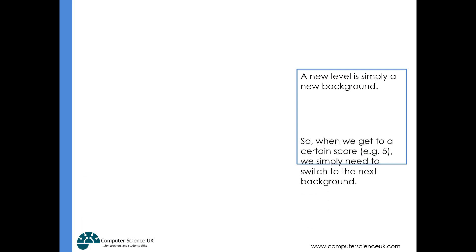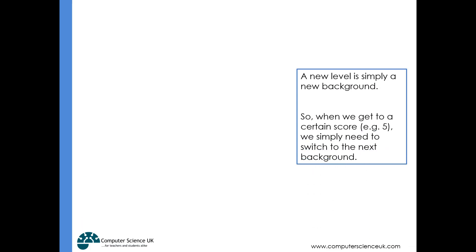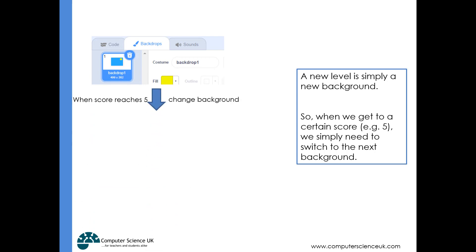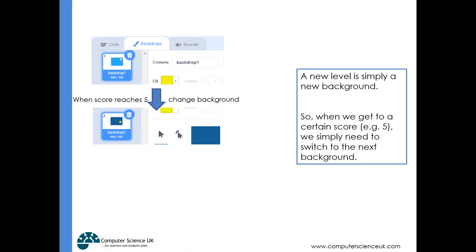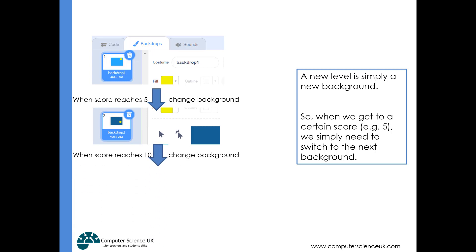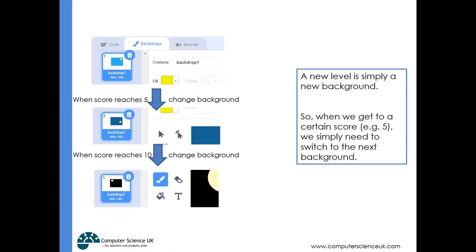A new level is simply a new background. The idea is that we start off on a particular background, get five points and it changes the background to the next one that we painted in our stage, then we get 10 points and we change the background again. That's the theory behind changing levels and having progression in our games - very straightforward.